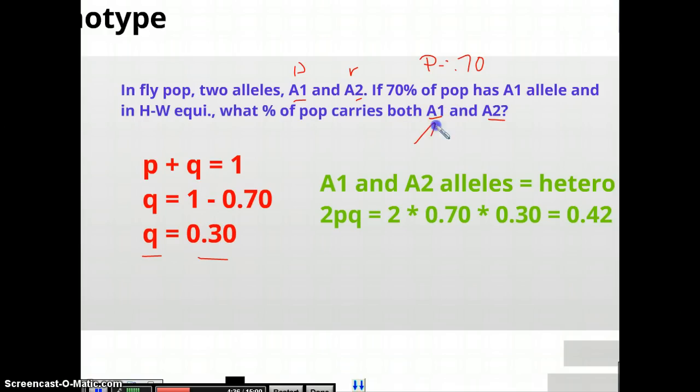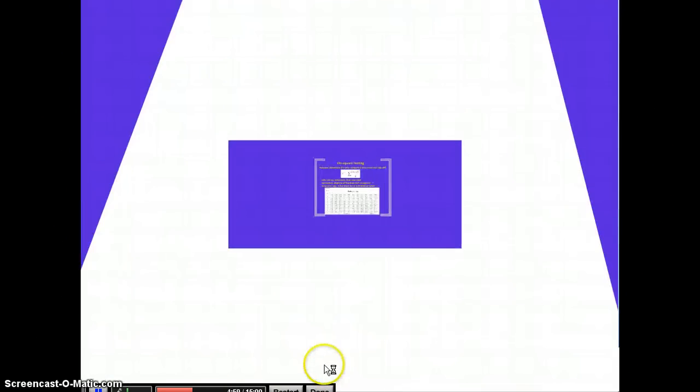Well, A1 and A2, that sounds like they're heterozygous, right? And the term for heterozygous individuals is 2PQ. So we take 2 times the 0.7 times the 0.3, these frequencies here, and then that gives you a frequency of 0.42 for heterozygous individuals. Again, the key is to find Q. Once you find Q, you just plug into the equations, and you're off and running.